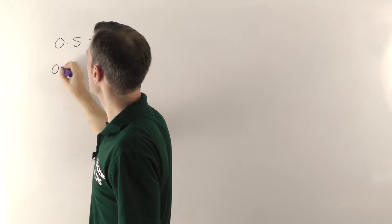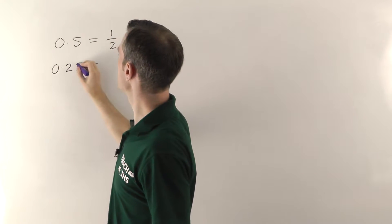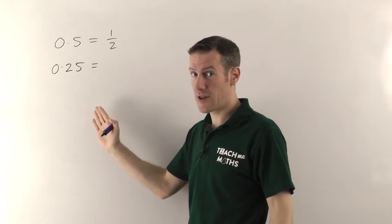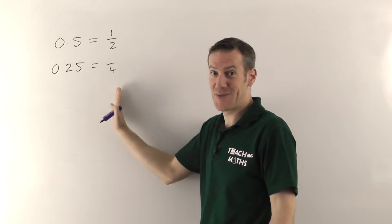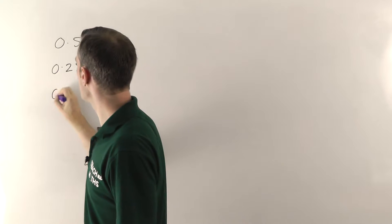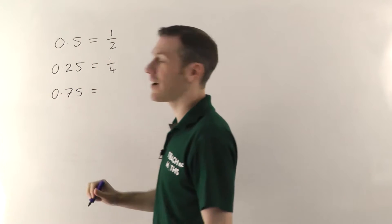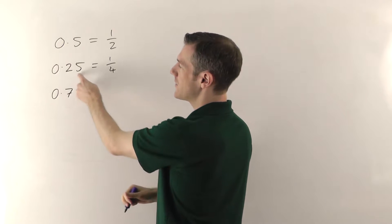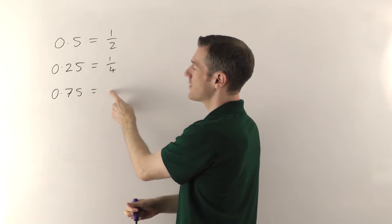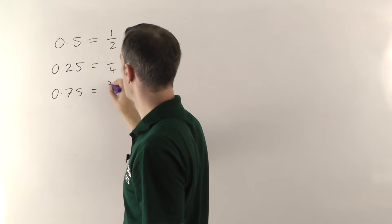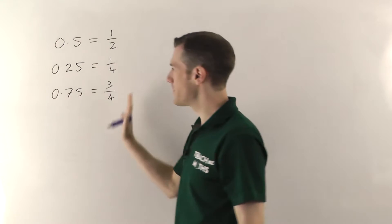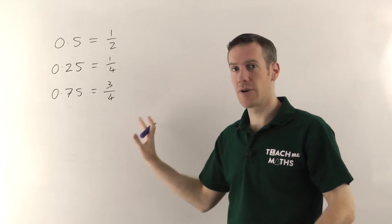So 0.25 will be the next one. You should just know that that's a quarter. Hopefully you already know these ones, most people do. Slightly trickier is 0.75. This is just 3 times 0.25, so the equivalent here will be just 3 times a quarter, so it's 3 quarters. So those are some basic ones you should know, and most people do know those already.